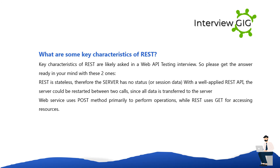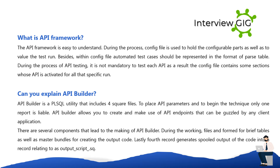What is an API framework? The API framework is easy to understand. A config file is used to hold configurable parts and to value the test run. Within the config file, automated test cases should be represented in the format of a parse table. During API testing, it is not mandatory to test each API; as a result, the config file contains sections whose APIs are activated for that specific run.